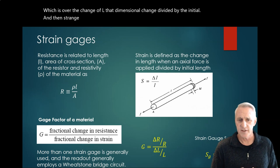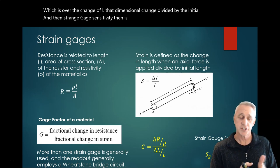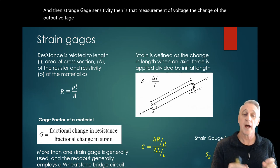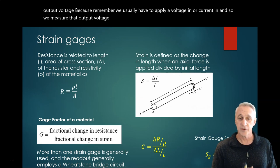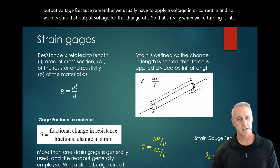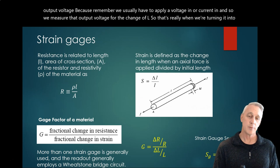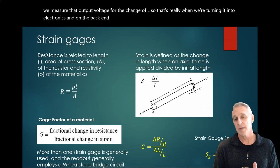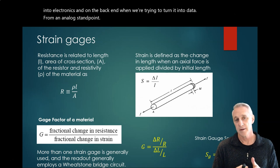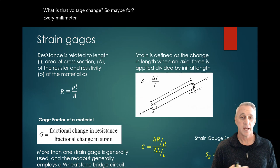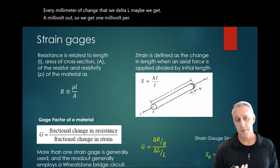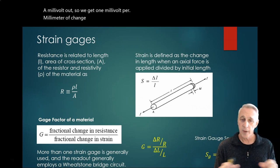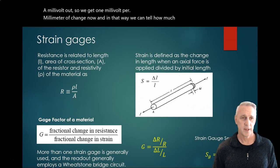And then strain gauge sensitivity is that measurement of voltage - the change of the output voltage - because remember, we usually have to apply a voltage in or current in, and so we measure that output voltage for the change of L. So that's really when we're turning it into electronics and on the back end, from an analog standpoint, what is that voltage change? So maybe for every millimeter of change that we delta L, maybe we get a millivolt out. So we get one millivolt per millimeter of change in L. And in that way, we can tell how much strain we have fairly directly.